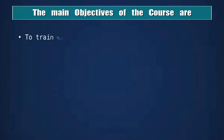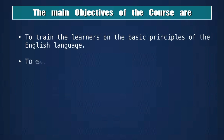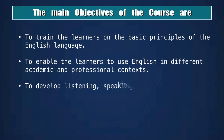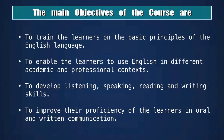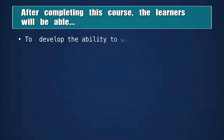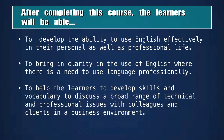The course is divided into four modules and the duration of this course is three months. This course is meant for any learner who wants to join a company or any profession where English is mandatory. The main objectives are to train learners on the basic principles of the English language, to enable learners to use English in different academic and professional contexts, to develop listening, speaking, reading and writing skills, and to improve proficiency in oral and written communication. The learning outcomes include developing the ability to use English effectively in personal and professional life, bringing clarity in the use of English professionally, and helping learners develop skills and vocabulary to discuss a broad range of technical and professional issues with colleagues and clients in a business environment.